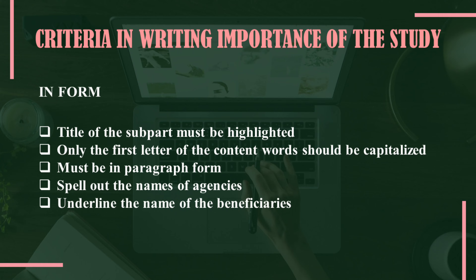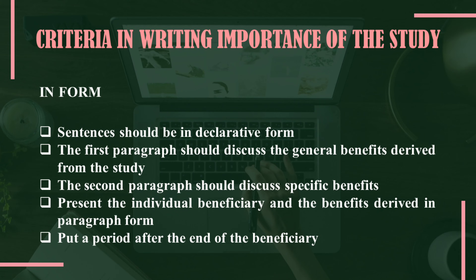It must be in paragraph form. Spell out the names of agencies, like Department of Health instead of writing DOH — provide the complete name instead of the acronym. Underline the name of the beneficiaries. Sentences should be in declarative form. The first paragraph should discuss the general benefits derived from the study. The second paragraph should discuss specific benefits, present the individual beneficiary, and the benefits derived in paragraph form.